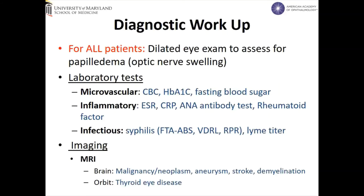In addition to acquiring a detailed history, including the pattern of onset and associated symptoms, diagnostic workup includes the following. Since a 6th nerve palsy can be a sign of raised intracranial pressure, a fundus exam should be performed in all patients to assess for papilledema, or swelling of the optic nerve. Various lab tests and imaging are also indicated. Lab tests commonly include a CBC, hemoglobin A1C, and fasting glucose. Abnormal findings in these may be more suggestive of a microvascular cause of 6th nerve palsy.